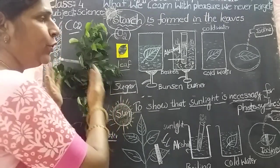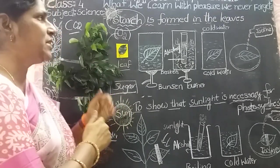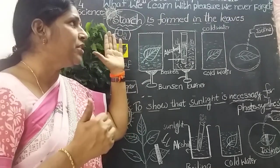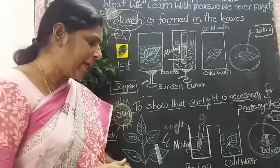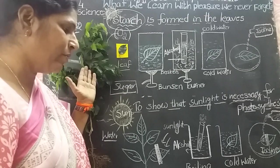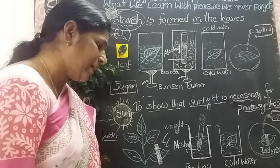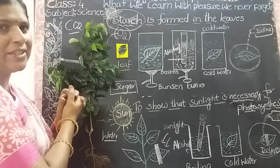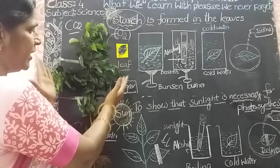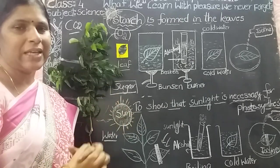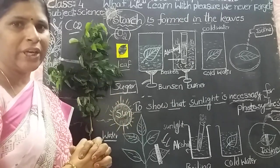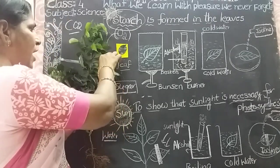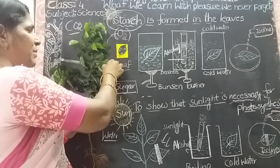Carbohydrates are formed during the process of photosynthesis. How will you prove that starch is present in the leaves? I will show you one experiment. Take one healthy potted plant, keep it in sunlight for a few hours. This is a green healthy plant — see, the leaves are not withered. Keep it under sunlight for a few hours, then pluck a green leaf from the plant.